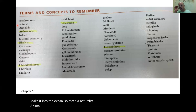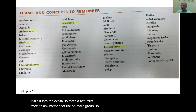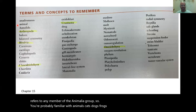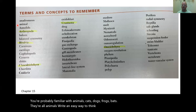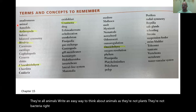Animal refers to any of the Animalia group. You're probably familiar with animals — cats, dogs, frogs, bats. An easy way to think about animals is they're not plants, they're not bacteria. There are a lot of them.